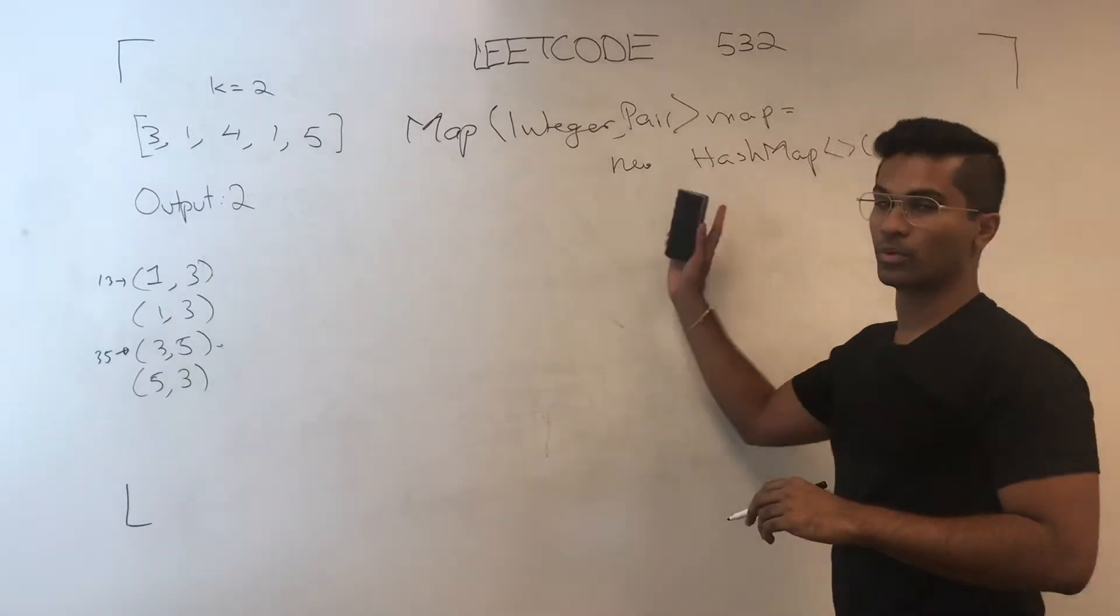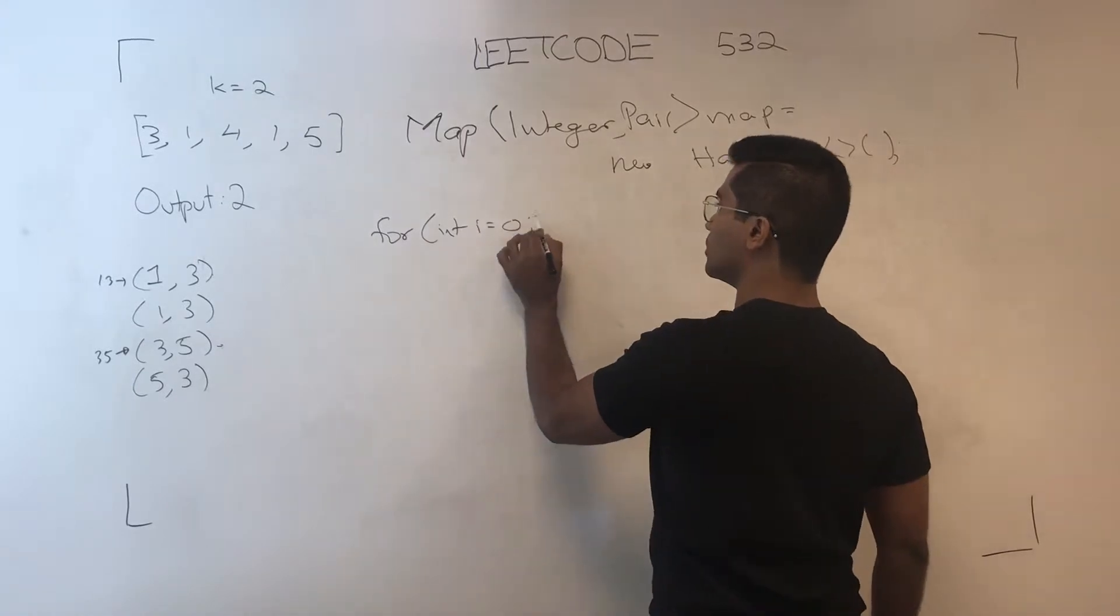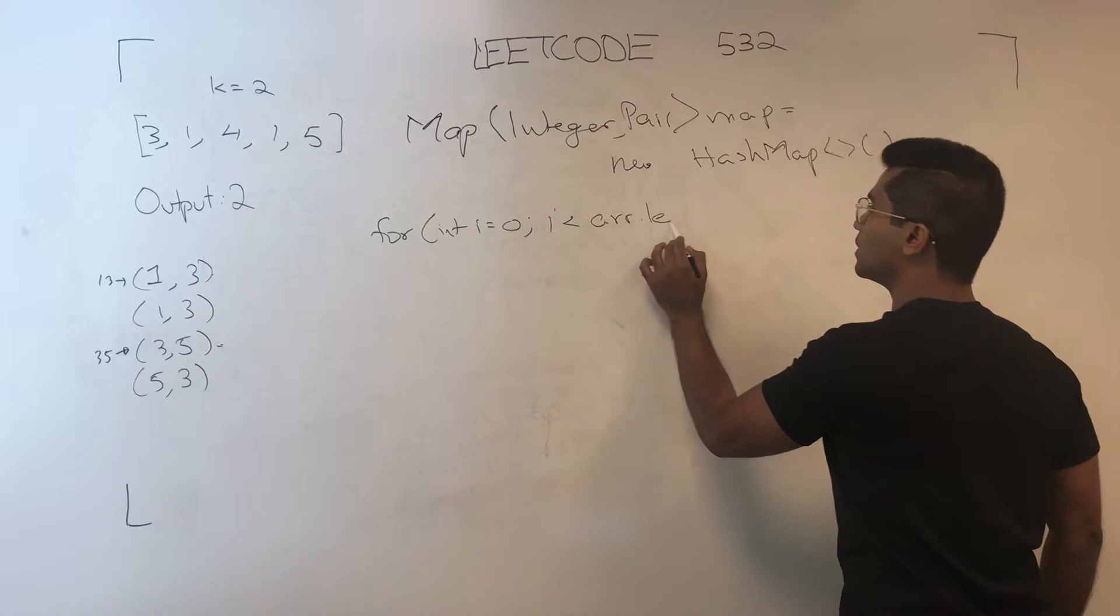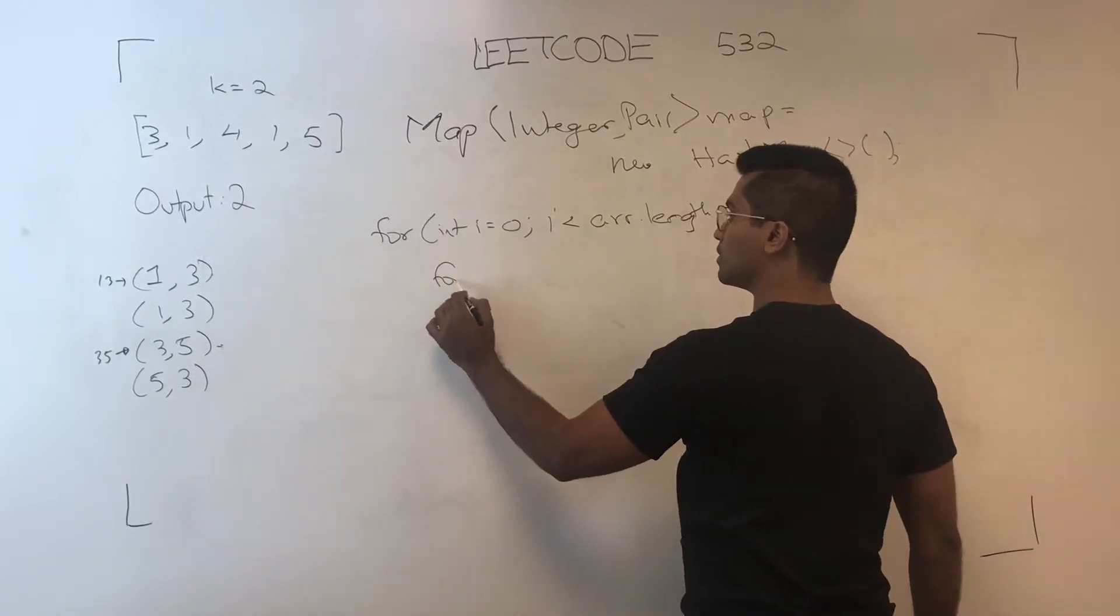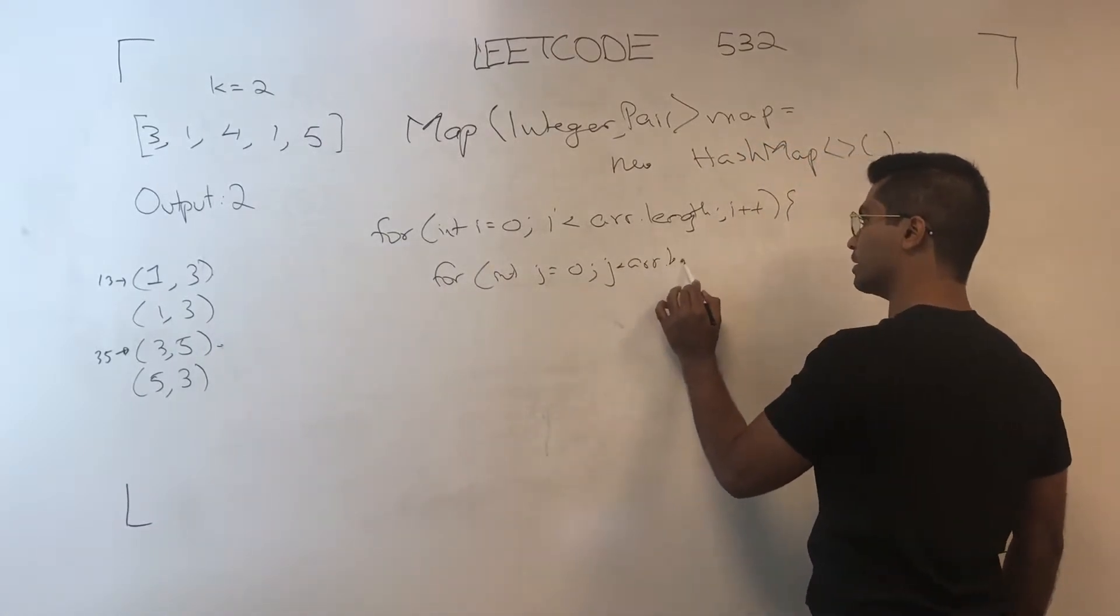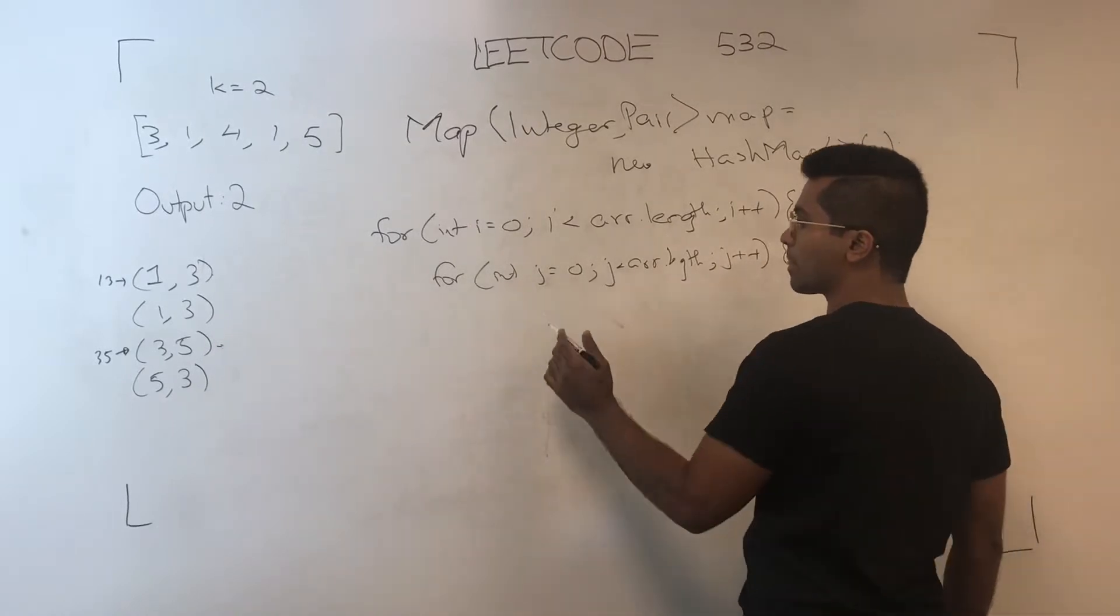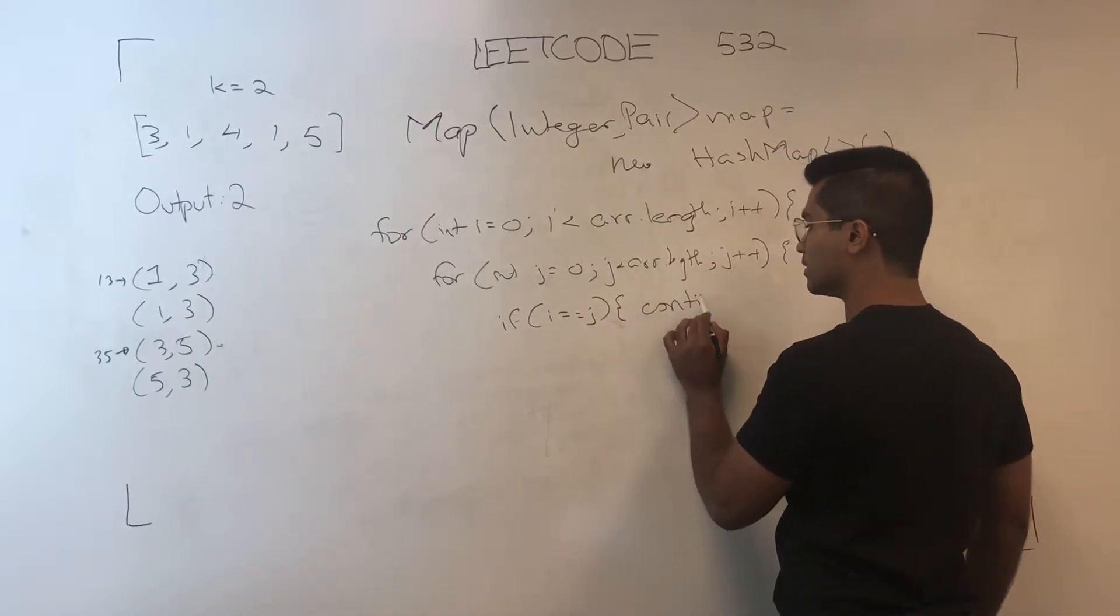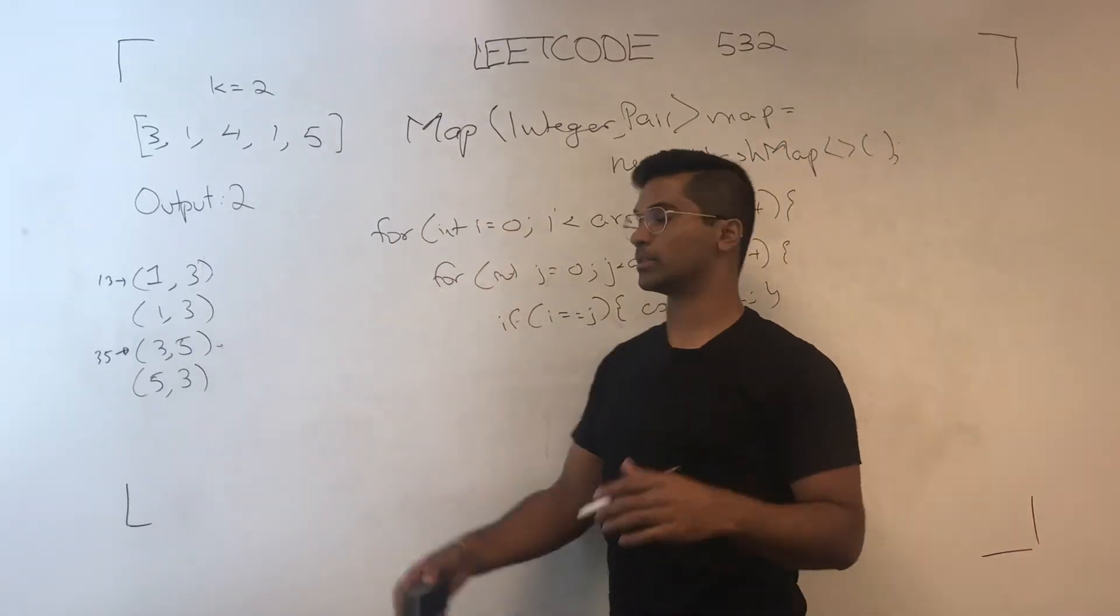Now we're going to say for int I equals 0, I less than array length, I plus plus, for J equals 0, J is less than array length, J plus plus. If I is equal to J, then continue, because we can't have 3 comma 3 as a coordinate, or a pair rather.